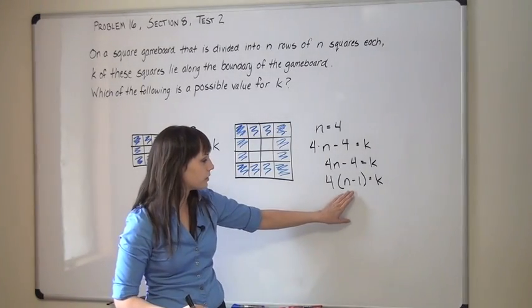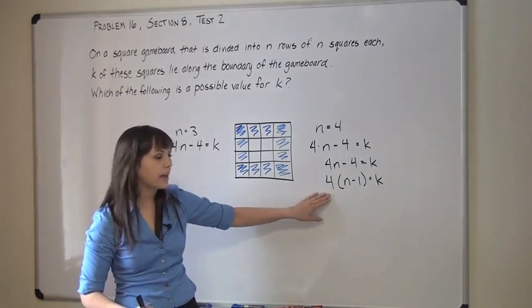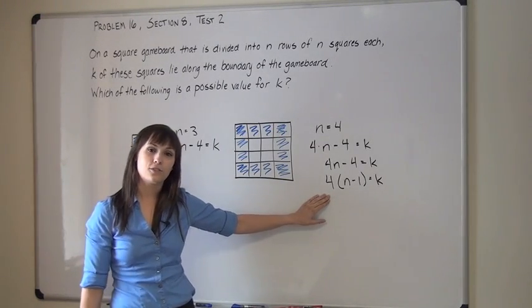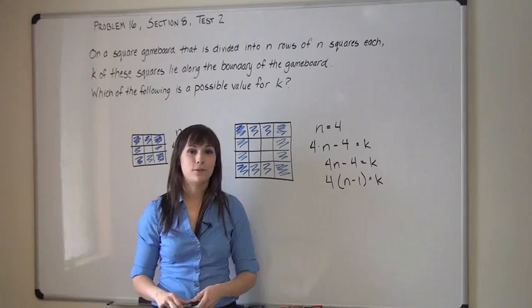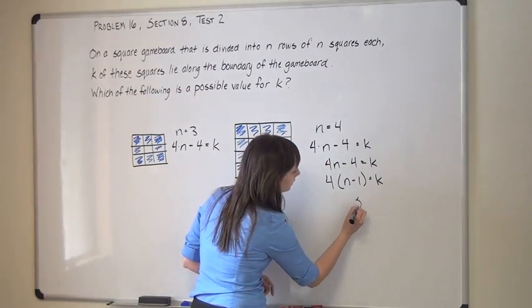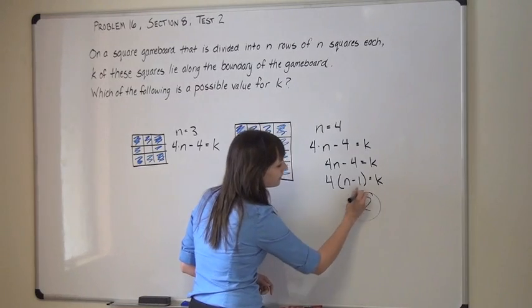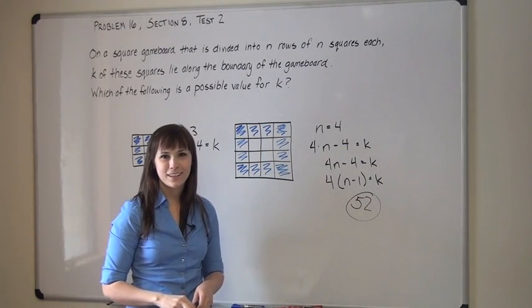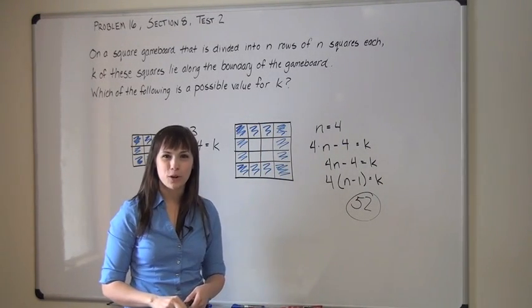Because n is going to be a whole number, k has got to be a multiple of 4. If you take another look at the answer choices, you'll see that only one of them is a multiple of 4. So the answer is E, 52. Because it's a multiple of 4. And that's how you do it. Thanks and please continue to check out more Mindfish videos.